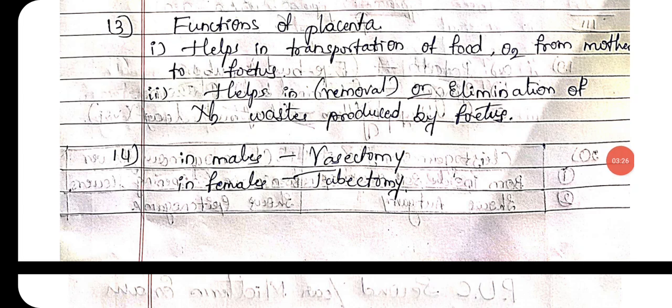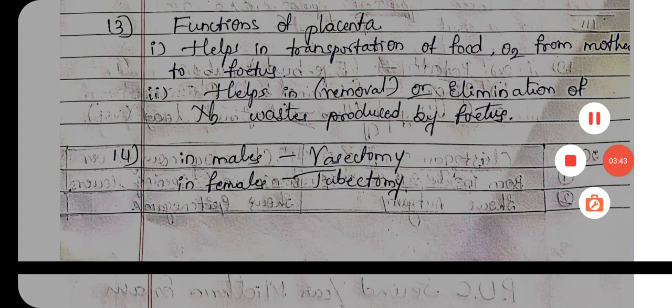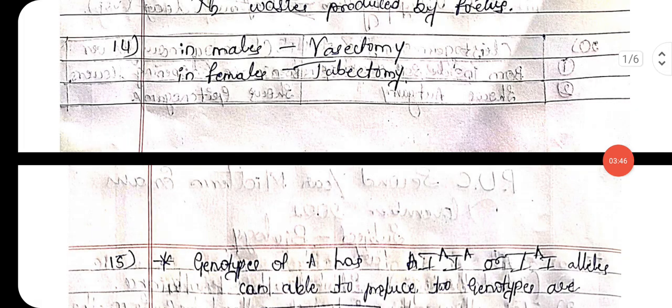Thirteenth one: functions of the placenta. The first function is that it helps in the transportation of food as well as oxygen from the mother to the fetus. The second function is that it helps in the removal or elimination of nitrogenous waste produced by the fetus.